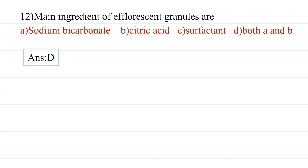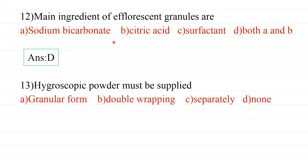Thirteenth question: Hygroscopic powders must be supplied — options include granule form, separate packing, double-wrapping, or none of the above. Since hygroscopic substances absorb moisture from the atmosphere, they must be packed with double-wrapping, typically in wax paper. The answer is double-wrapping.